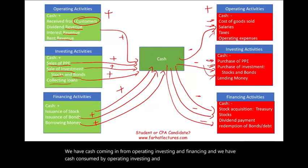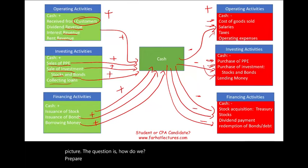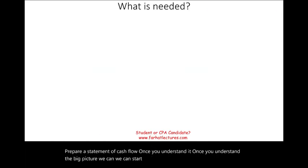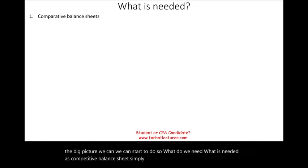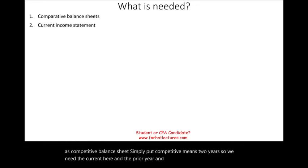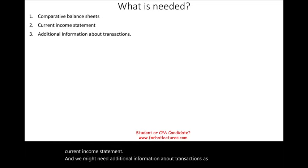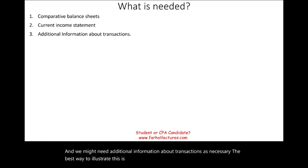The question is how do we actually prepare a statement of cash flow? What is needed is a comparative balance sheet — comparative means two years, the current year and the prior year. We also need the current income statement, and we might need additional information about transactions as necessary. The best way to illustrate this is to start with a simple example.